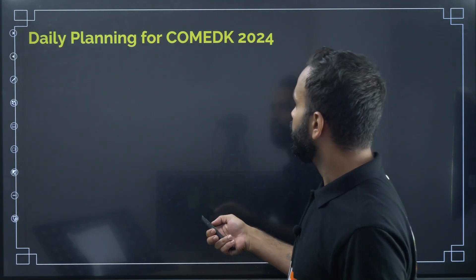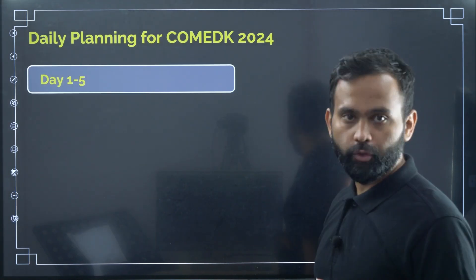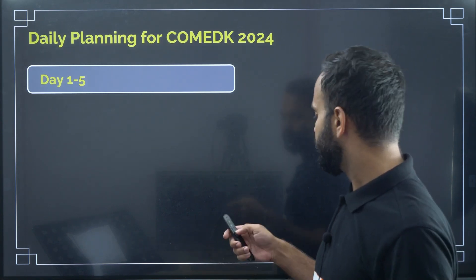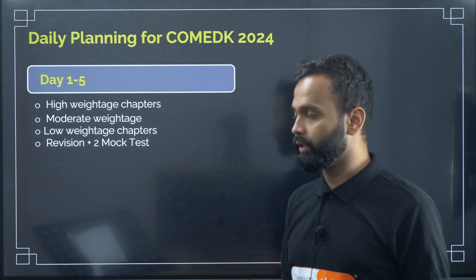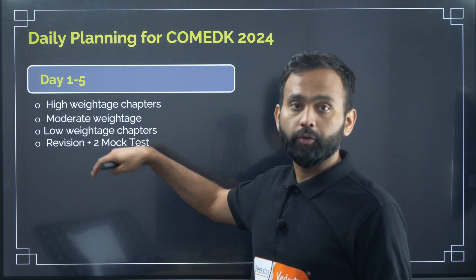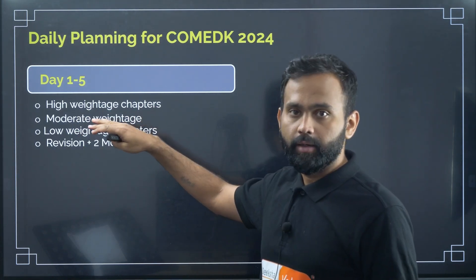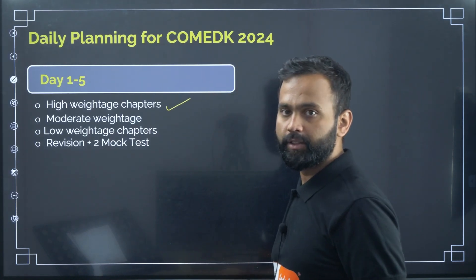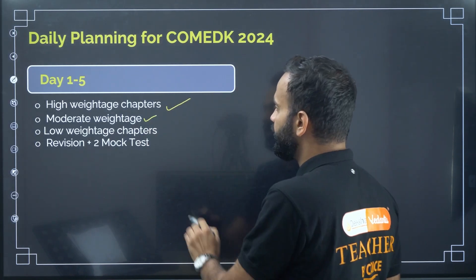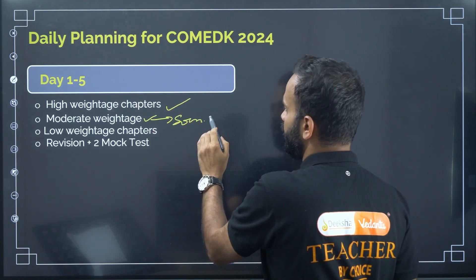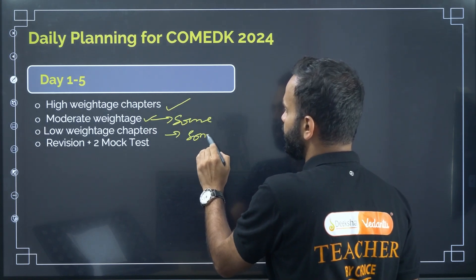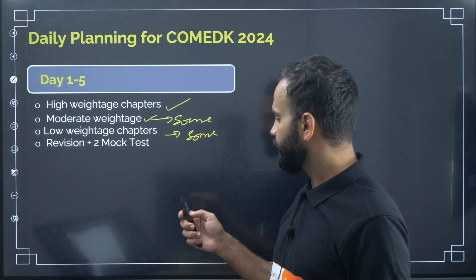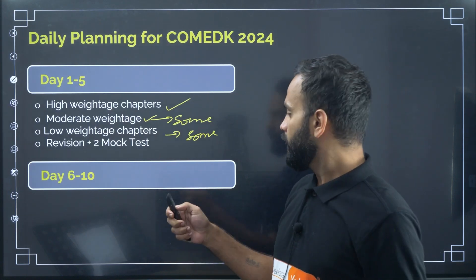So, daily planning for COMET K 2024. I have divided 10 days into two parts: first five days and next five days. In first five days, you will be focusing on and completing high weightage chapters, some moderate weightage chapters, and some low weightage chapters. After that, you have to do revision and take two mock tests.